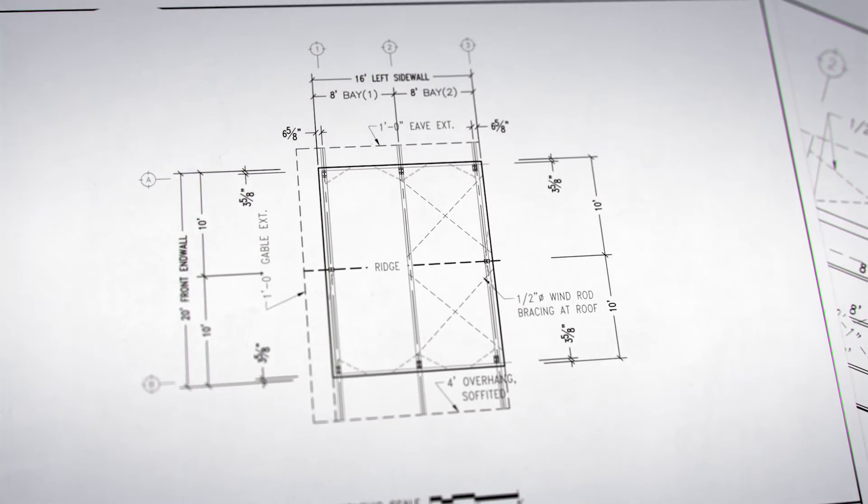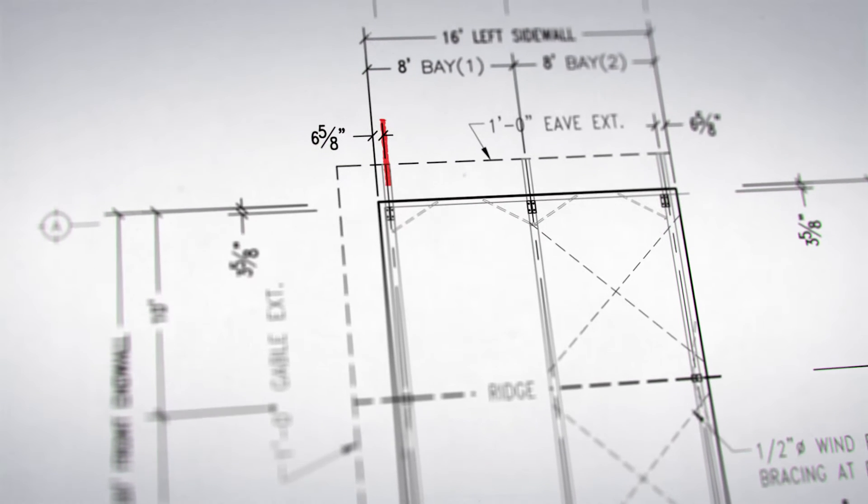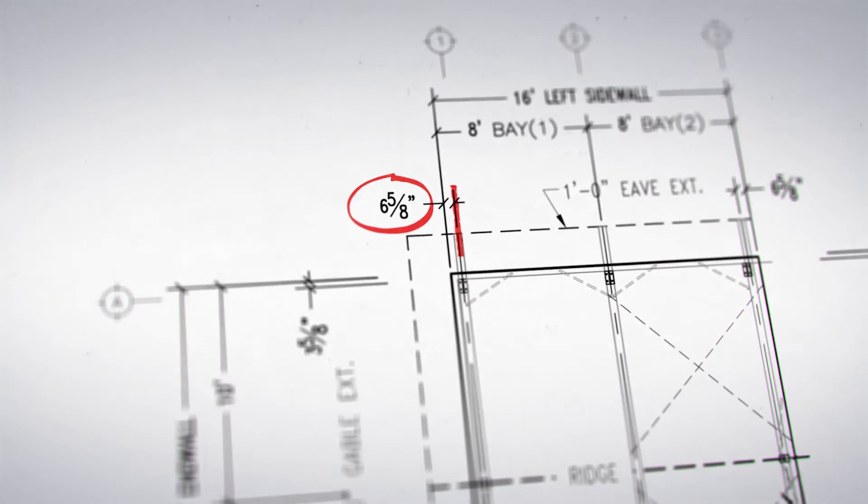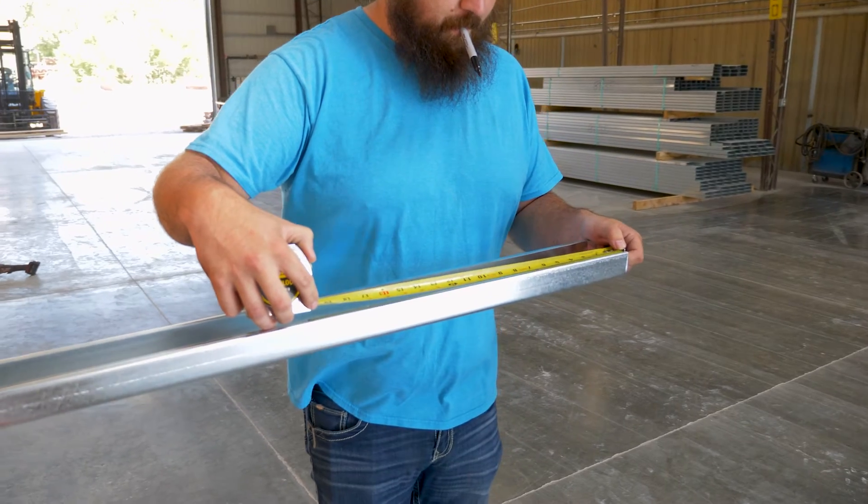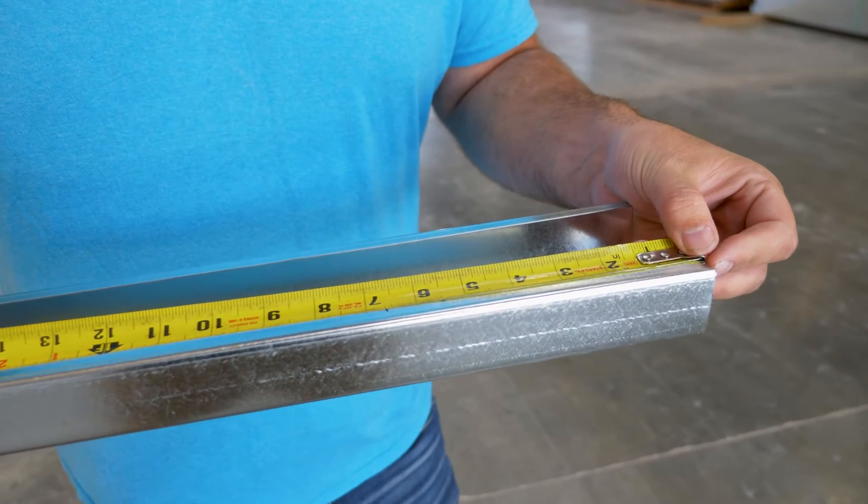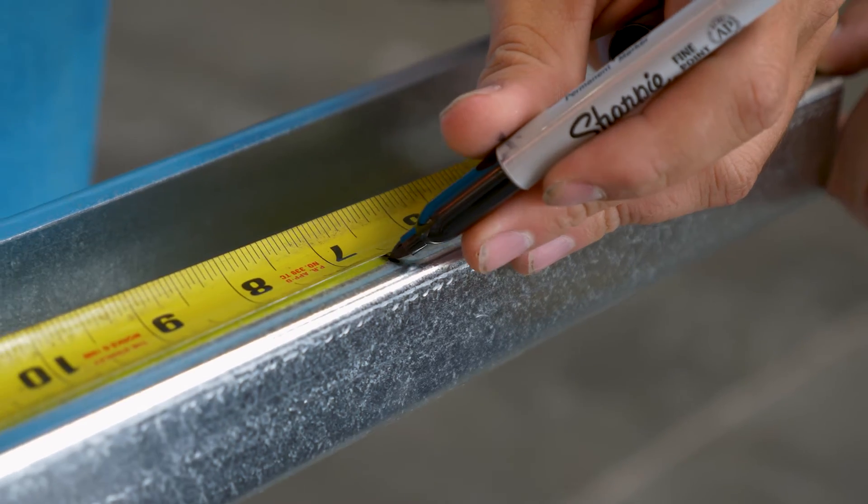Referencing our W1 drawing, we know that the center line of our column is 6 and 5 eighths inches from the edge of the foundation at the end wall. Measure 6 and 5 eighths inches from the end of your girt to identify the center line of the column and make a mark.